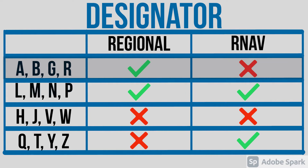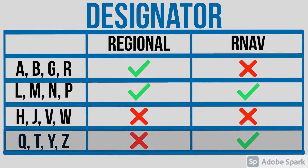Letters Lima, Mike, November, and Papa are used for area navigation routes that do form part of those regional networks or fairways. Letters Hotel, Juliet, Victor, and Whiskey are used for routes that do not form part of the regional networks or fairways, and are not area navigation routes. Letters Quebec, Tango, Yankee, and Zulu are used for area navigation routes that do not form part of the regional networks or fairways.